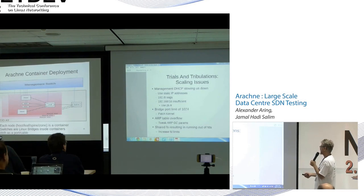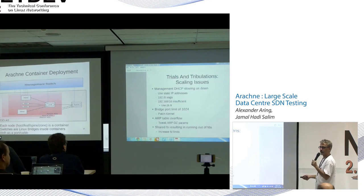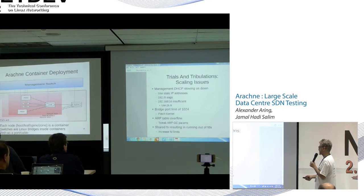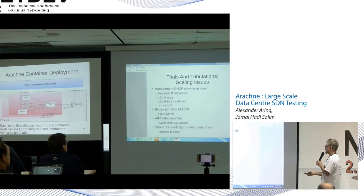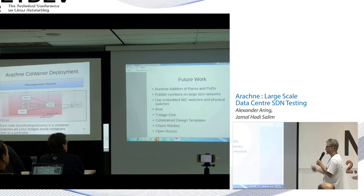We also ran into a port limit on the bridges — it was 1024. We have some really good suggestions from Netconf on how to fix that. ARP table overflow all over the place — we had to tweak ARP garbage collection parameters. Shared file system: if you run something like LLDP inside the container, Unix file descriptors are shared, and we were quickly running out of file descriptors. You can increase the file limits.